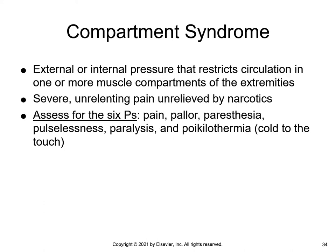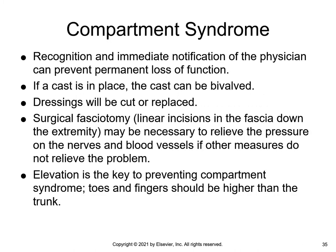Compartment syndrome is caused by external or internal pressure and seriously restricts circulation to that area. External pressure can occur from dressings or casts that are too tight. Internal pressure occurs from excessive IV fluid infusion, inflammation, and edema — the increased fluid puts pressure on the tissues, nerves, and blood vessels, thereby decreasing blood flow. If a cast is in place, it will need to be bivalved to allow the pressure to not be constricted on the extremity.